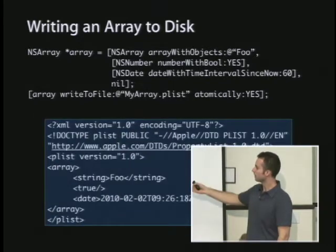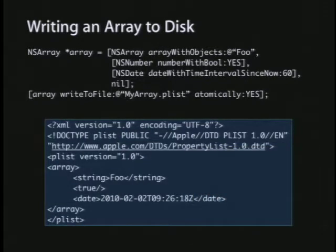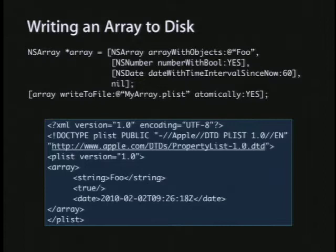What you get when you write a property list as XML looks like a standard XML DTD with the property list schema, and then the objects — string 'foo', the Boolean true, and a date. If you write the binary form, you wouldn't be able to read it as plain text.